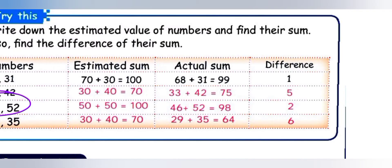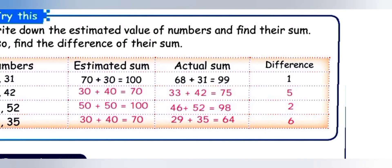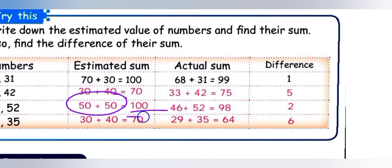Next: 46 plus 52. Actual sum is 98. Estimated: 46 — ones place 6 is more than 5, so 4 tens becomes 5 tens, giving 50. 52 — ones place 2 is less than 5, so 5 tens stays 50. Estimated sum: 50 plus 50 equals 100. Difference: 100 minus 98 equals 2.